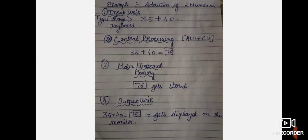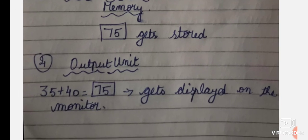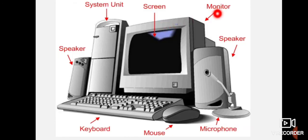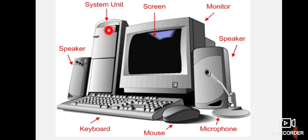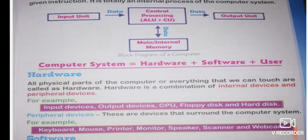Finally, the data will move on to the output unit. The final result is displayed — 75 gets stored in computer memory and the final answer is displayed on the monitor, which is the big screen display. So the steps are: type using the keyboard, move to the CPU, move to computer memory, and finally display on the monitor.